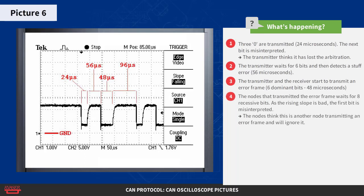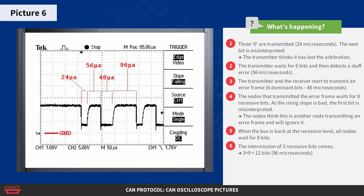The nodes that transmitted the error frame now wait for eight recessive bits, but as the rising slope is bad, the first bit is misinterpreted. The nodes will think this is another node transmitting an error frame and will ignore it. When the bus is back at recessive level, all nodes wait for eight bits. Then the intermission of three recessive bits comes. Three plus nine equals 12 bits equals 96 microseconds, as seen in the picture. The transmitter then tries again with the same result. After a while, the transmitter goes error passive and will behave as described earlier.